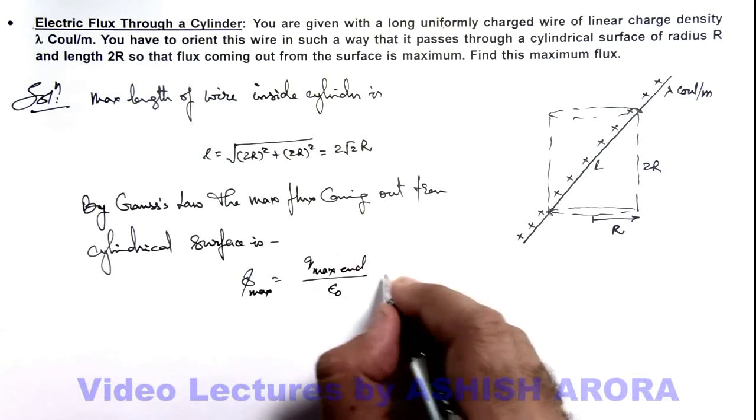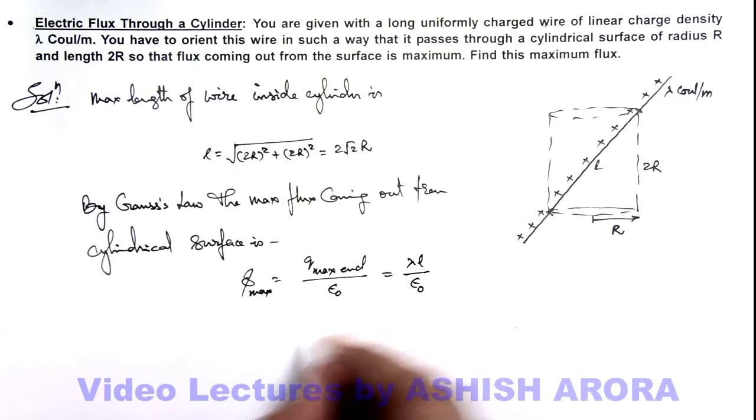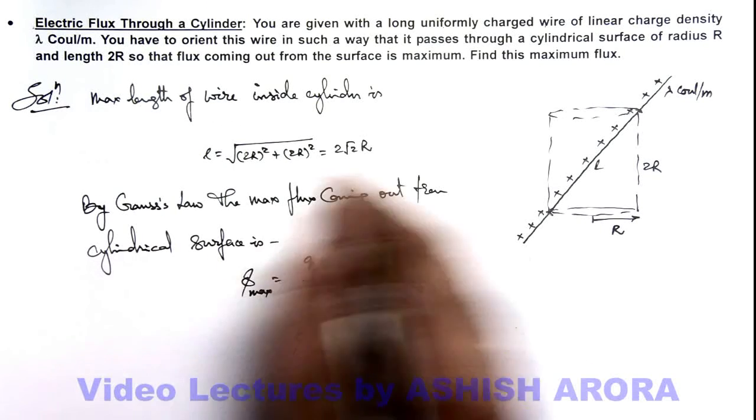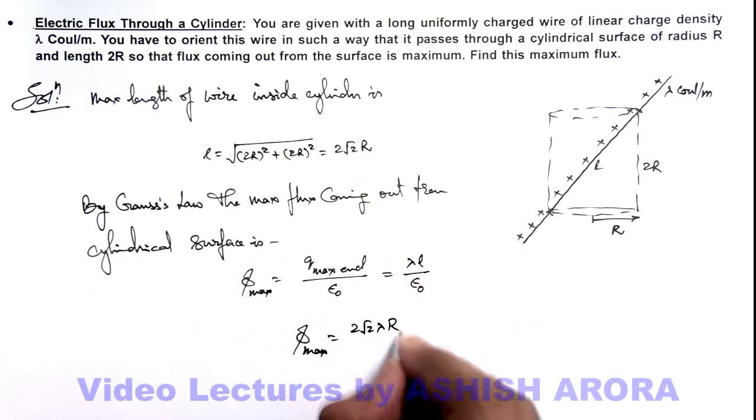And here the maximum charge enclosed will be lambda L by epsilon not, which can be given as Phi max equals 2 root 2 R, so this is 2 root 2 lambda R by epsilon not. That is the answer to this situation.